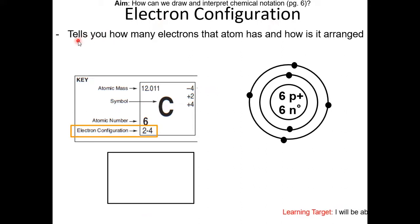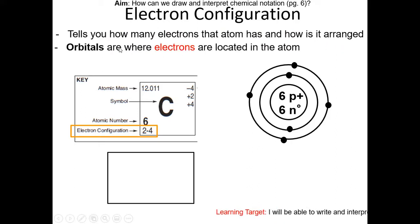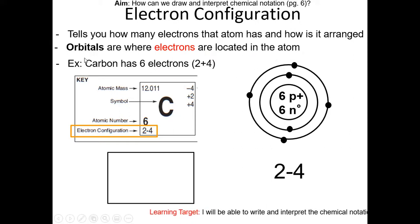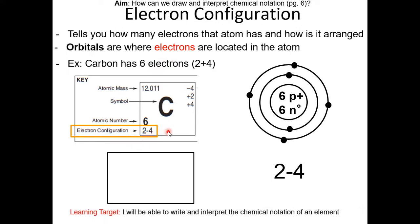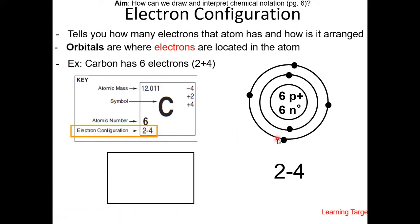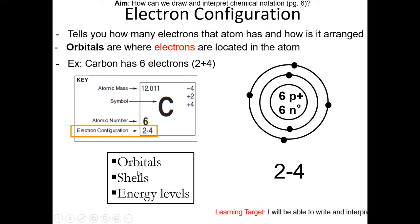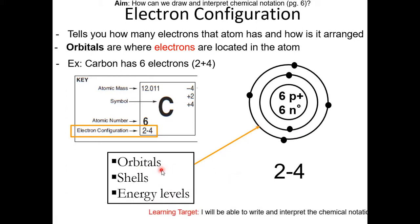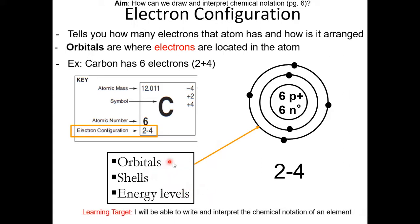Next is electron configuration — it tells you how many electrons that atom has and how they are arranged. Orbitals are where the electrons are located in the atom. Carbon has 6 electrons. From the electron configuration of 2-4, you just add up these numbers. The electrons are the black dots on the rings or circles — these are the orbitals, shells, and energy levels. In this model, these terms basically mean the same thing and are used interchangeably.